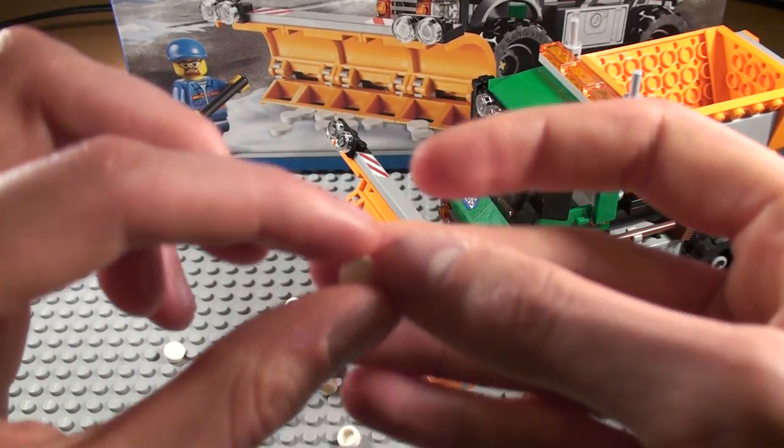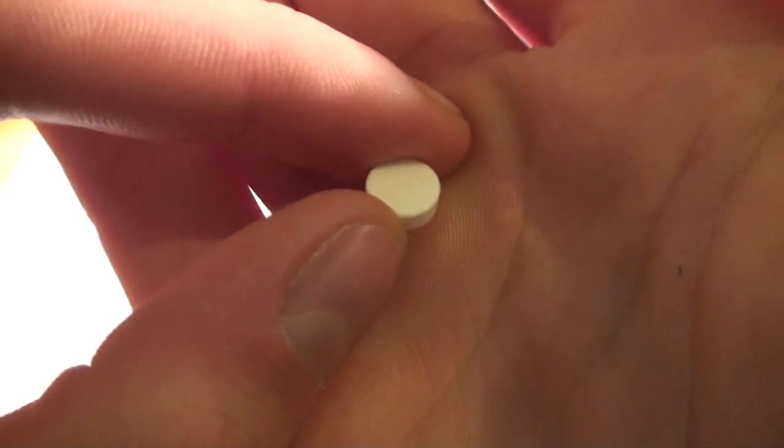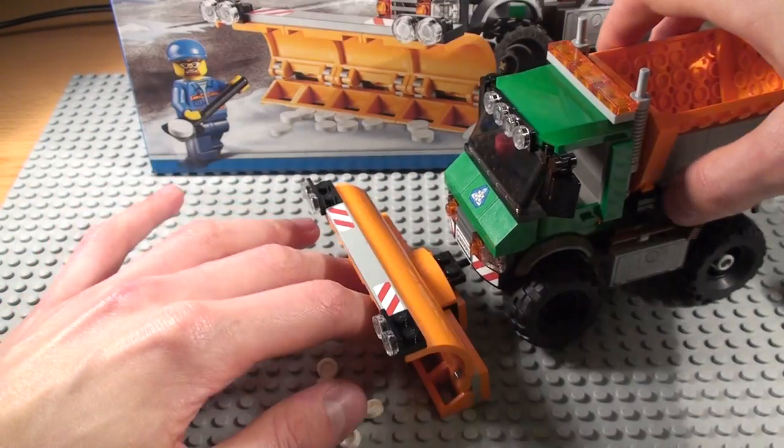But while I'm on it, here are the little snow pieces. They're just little one-by-one flat round pieces. They're quite useful for other stuff as well.